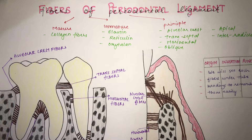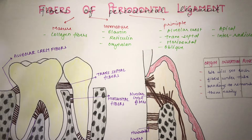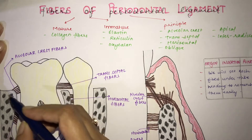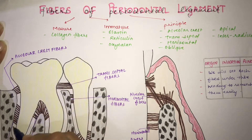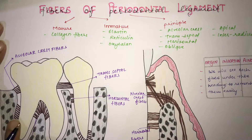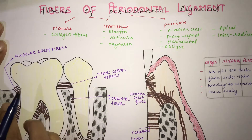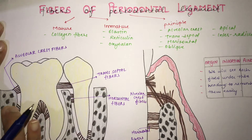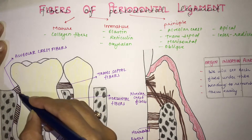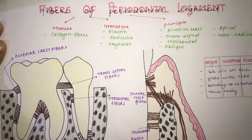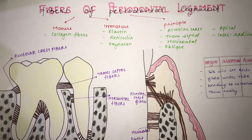Before seeing the fibers, we are going to see what exactly the periodontal ligament is. The periodontal ligament is composed of complex vascular and highly cellular connective tissue which surrounds the root, connecting to the inner wall of your alveolar bone. The tissue between your roots and the alveolar bone is the periodontal ligament.